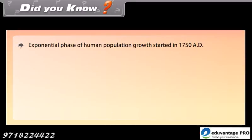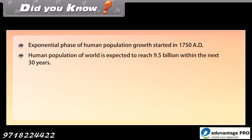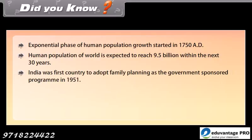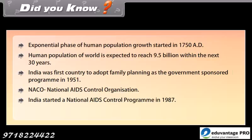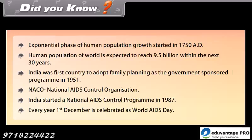The exponential phase of human population growth started in 1750 AD. The human population of the world is expected to reach 9.5 billion within the next 30 years. India was the first country to adopt family planning as a government-sponsored program in 1951. NACO — the National AIDS Control Organization — started a National AIDS Control Program in India in 1987. Every year, the 1st of December is celebrated as World AIDS Day.